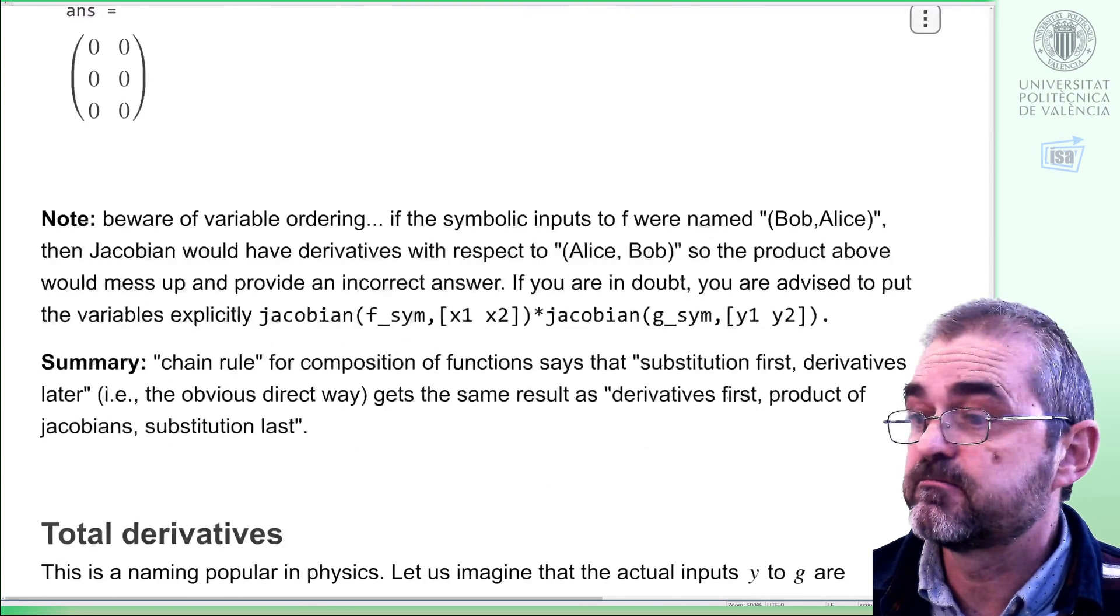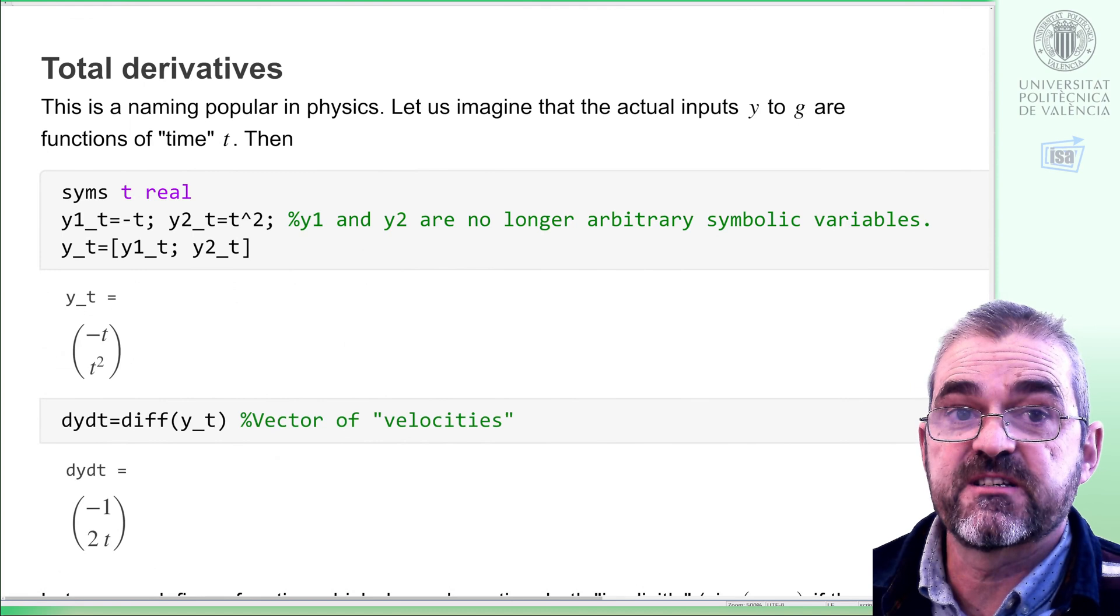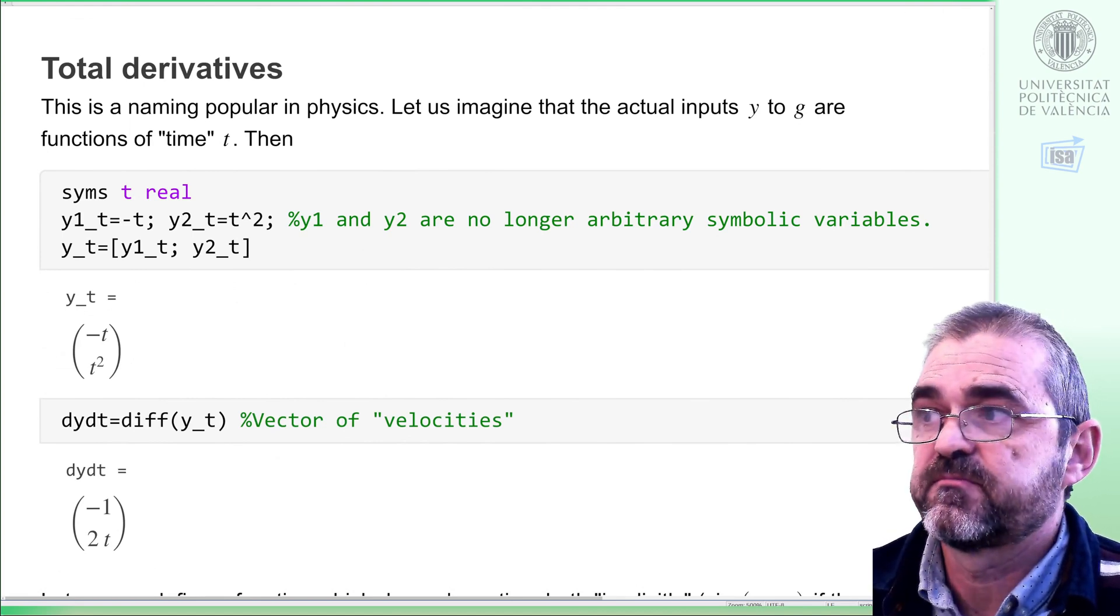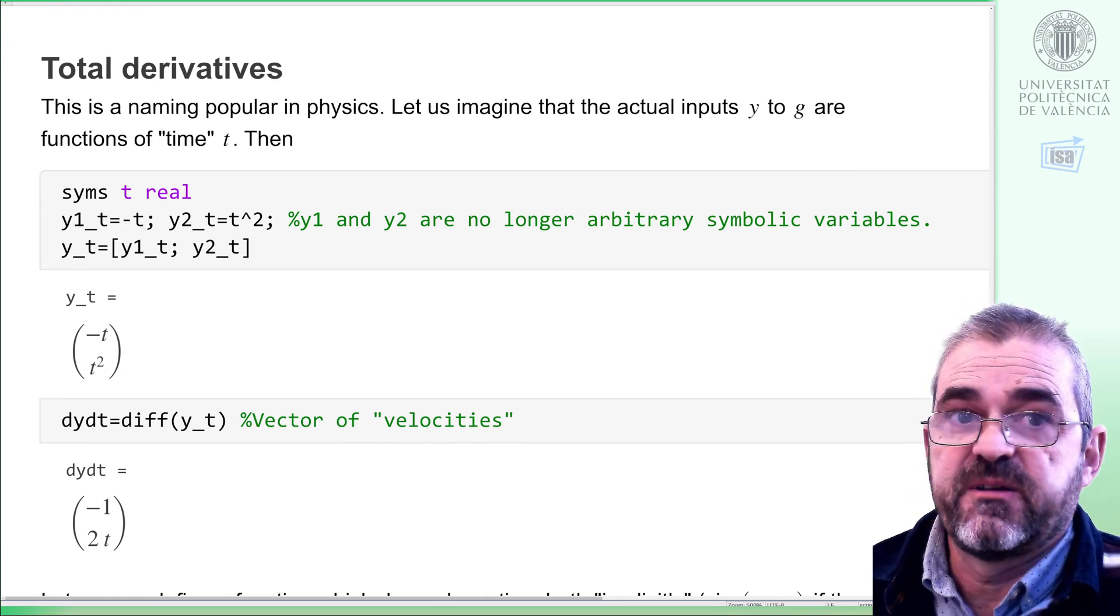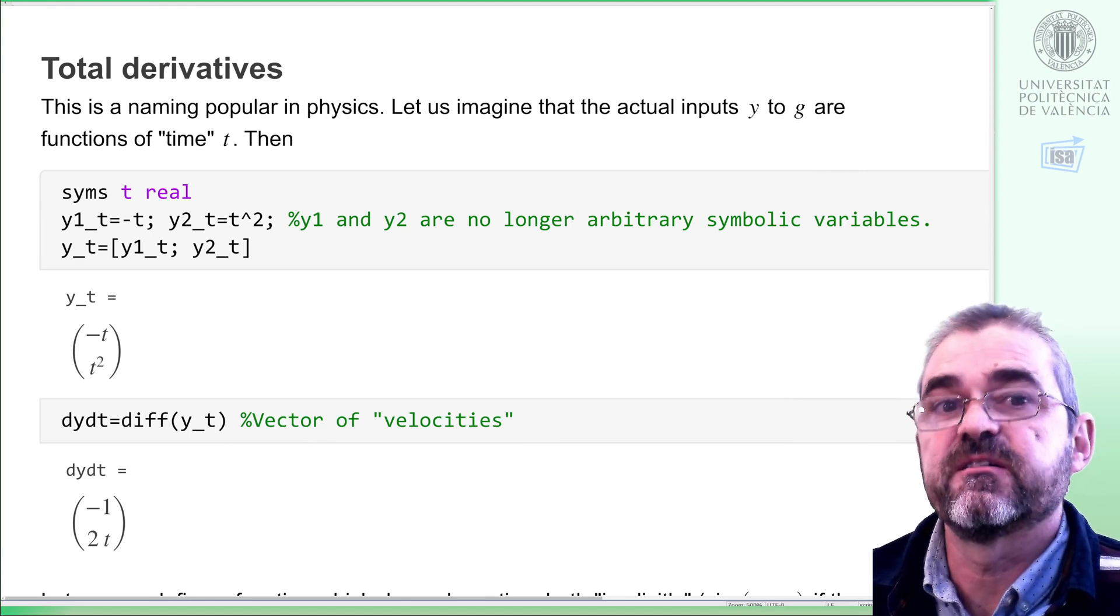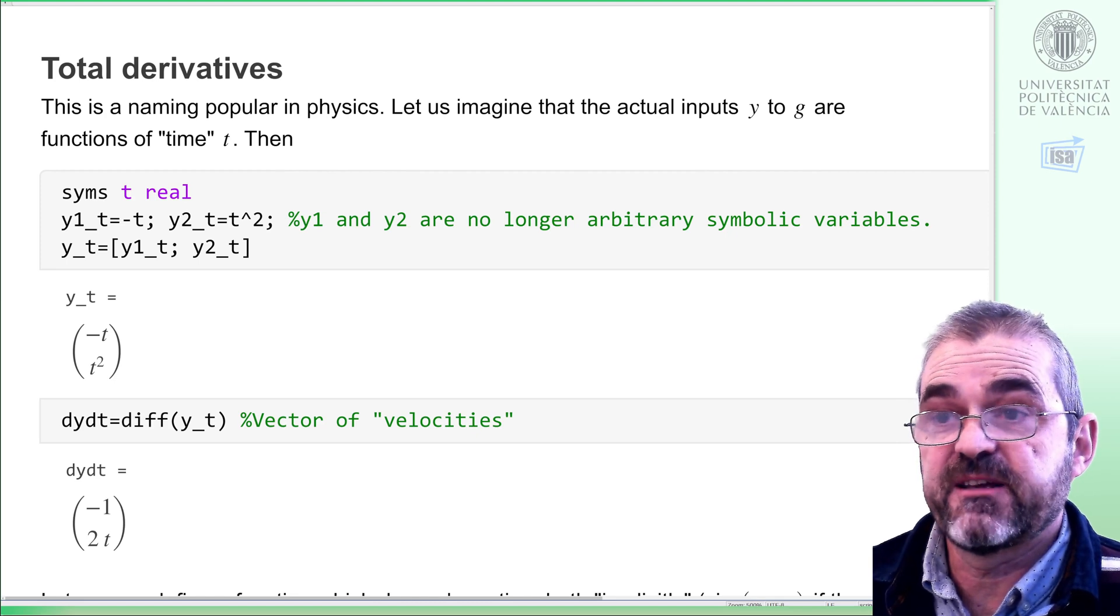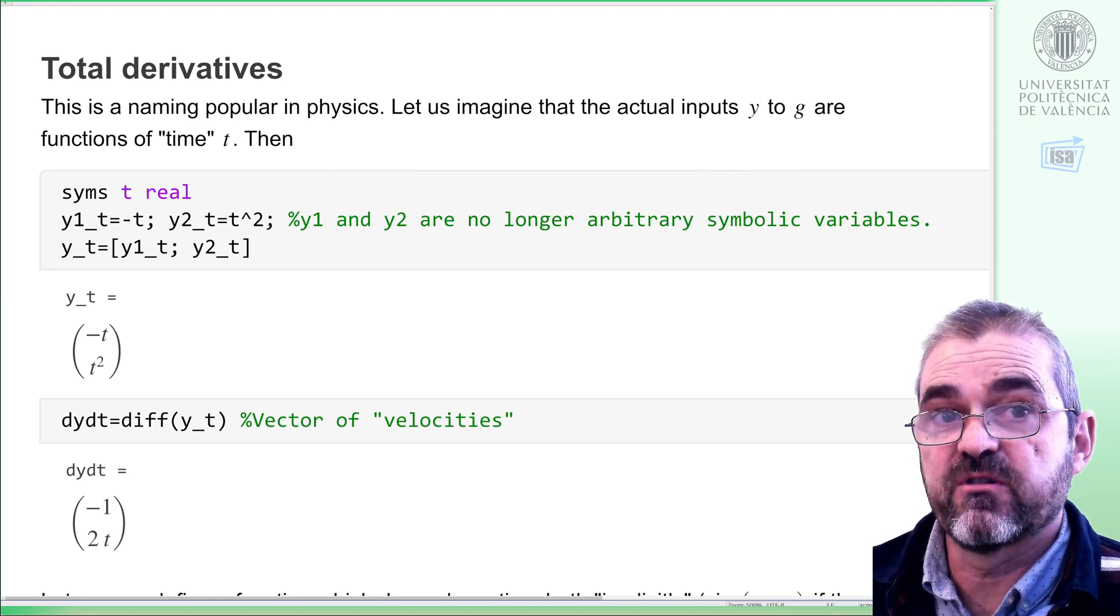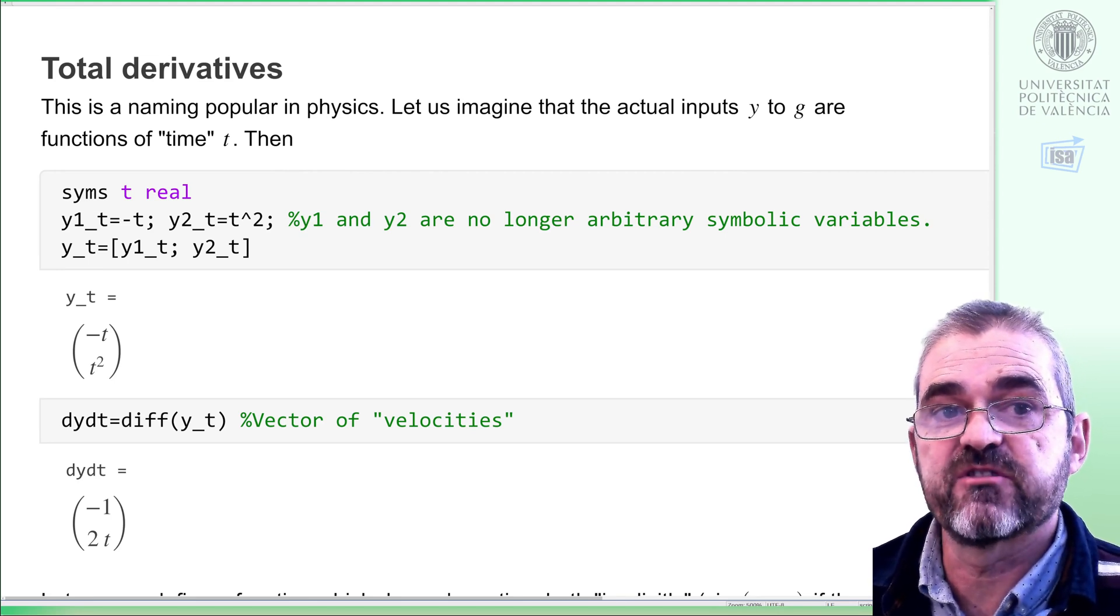We'll now see a second example of chain rule using the physics jargon of partial versus total derivatives. What's that? Well, it's just chain rule. Don't be afraid. I mean, in physics, there is a special letter, a special variable in dynamics called time. The objective of dynamics is assessing properties of the evolution of things with respect to time.